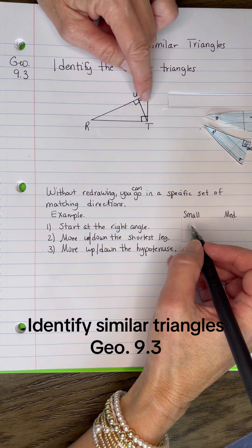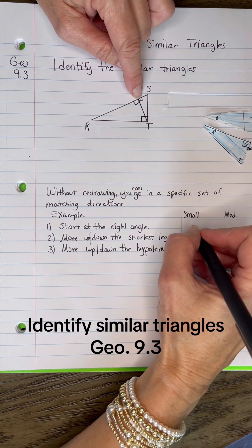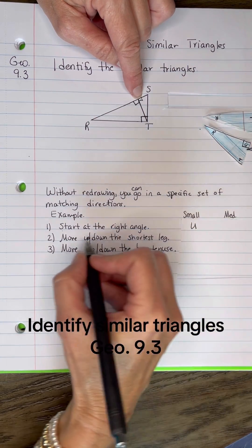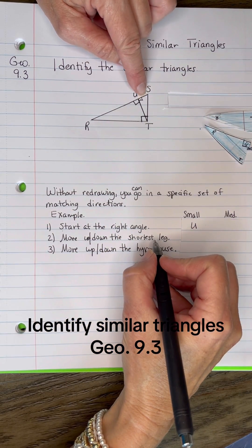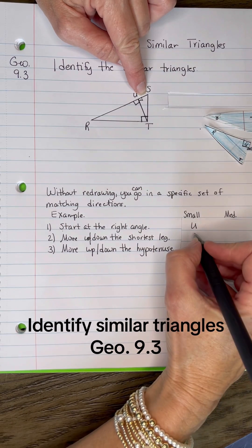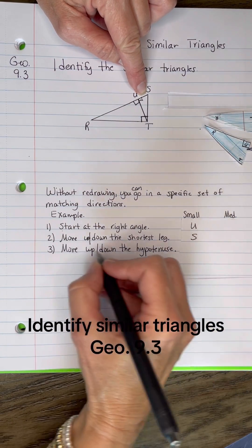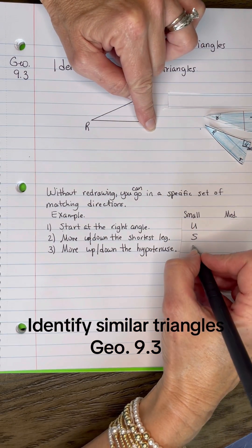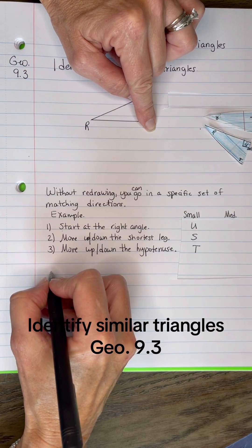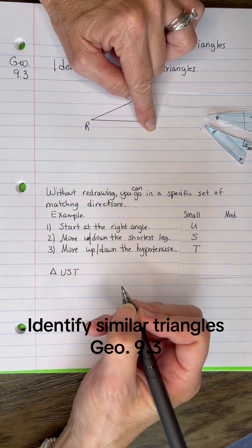For the smallest triangle here, if I start at the right angle, that's U. And then if I go up or down the shortest leg of the little one, that would go to S. And then if I go up or down the hypotenuse, that would go to T. So that would be triangle UST in that order.